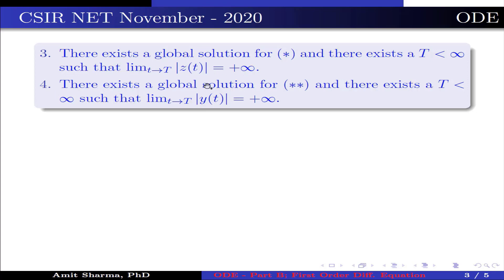Option 4: there exists a global solution for (**) and there exists a T < ∞ such that lim_{t→T} |y(t)| = +∞.